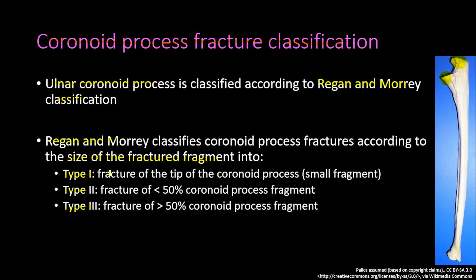In Type 1, the fracture involves only the tip of the coronoid process — a small fragment. Type 2 is a fracture of less than 50% of the coronoid process fragment. Type 3 is a fracture of more than 50% of the coronoid process fragment.